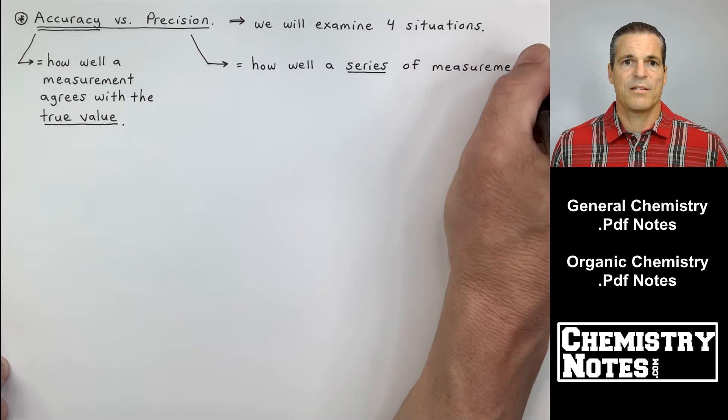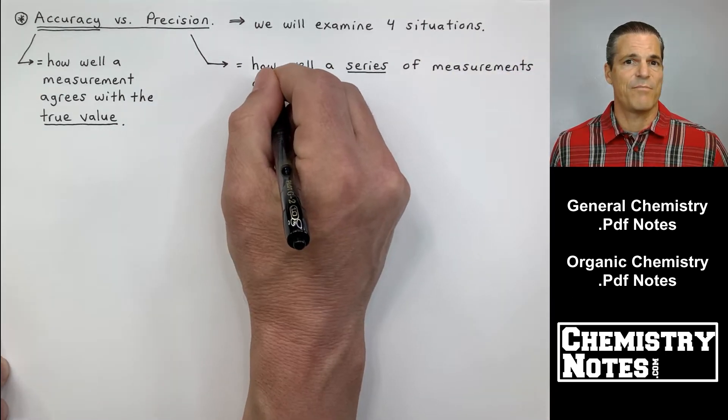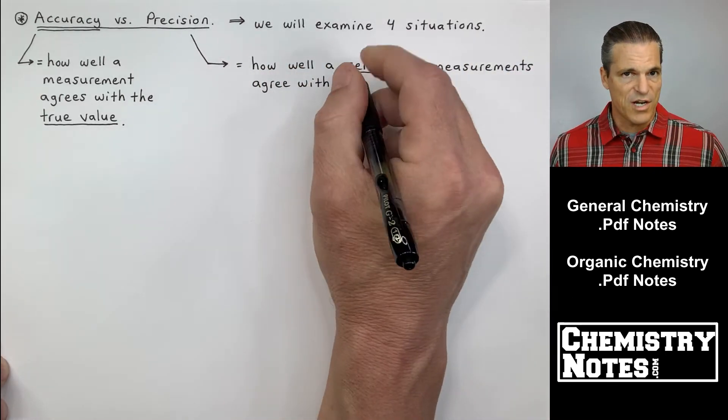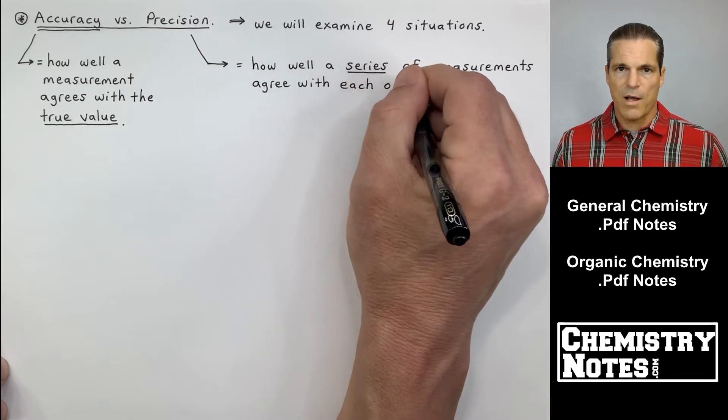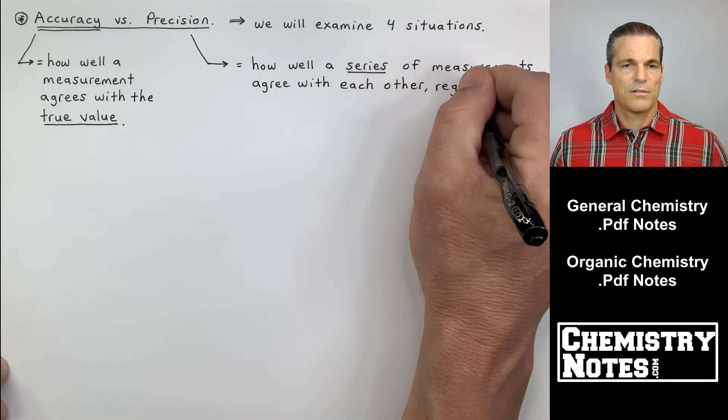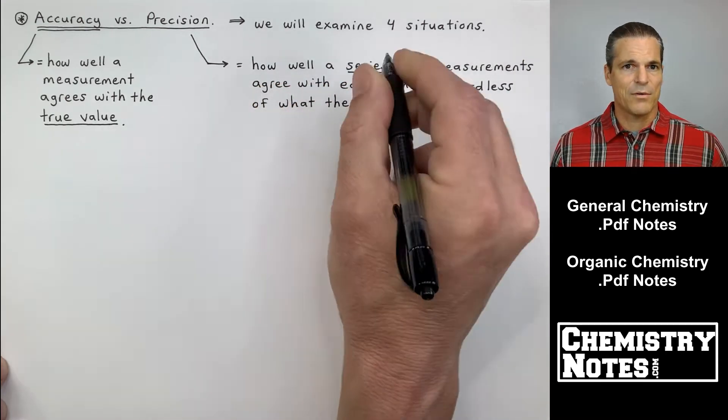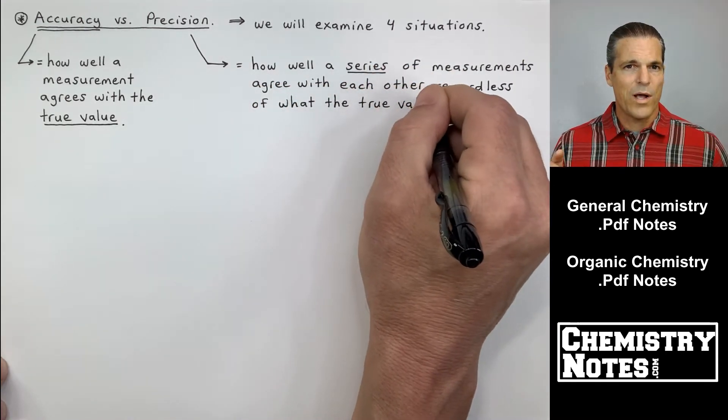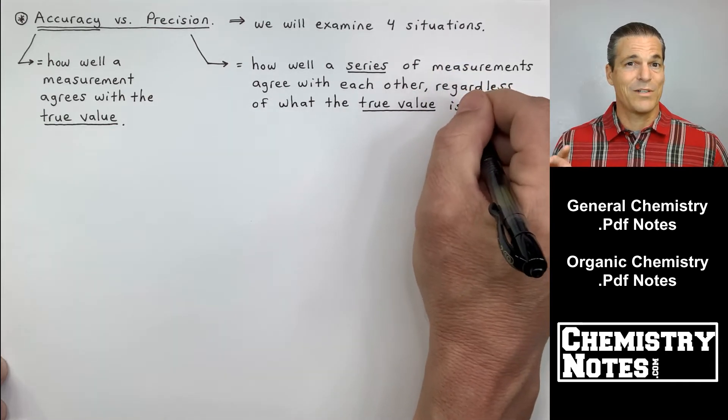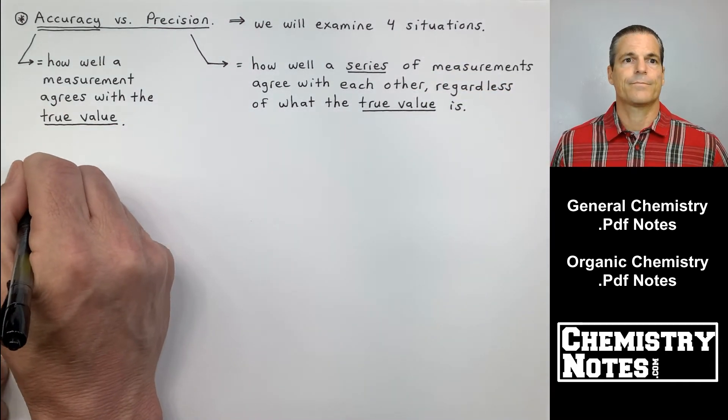Precision, on the other hand, is how well a series of measurements agree with each other. Who cares about what the true value is? So precision has nothing to do with accuracy because we don't care about the true value. We only care about how well do our measurements kind of relate to each other.